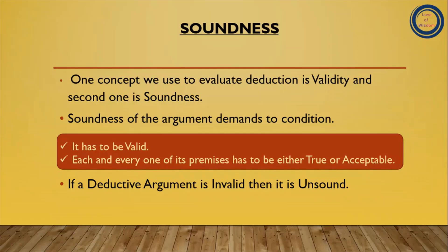Yeh iski doosri condition hai. Jis mein yeh dono conditions successfully meet hongi, woh argument deductive argument sound kehlayega. Aur jis mein yeh conditions nahi milegi woh invalid hoga, aur is liye use unsound kahenge. So a valid argument is a sound argument, and an invalid argument is an unsound argument. As long as a deductive argument fails to meet one of these two conditions, then it is unsound.